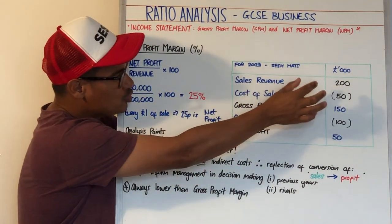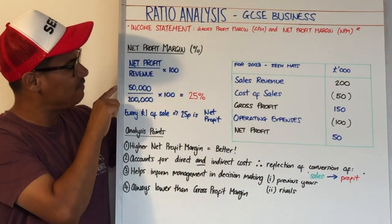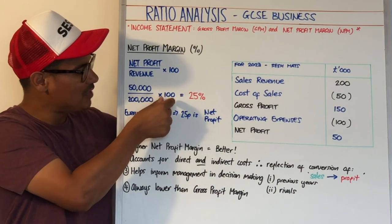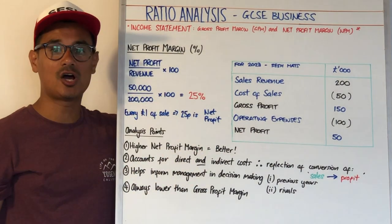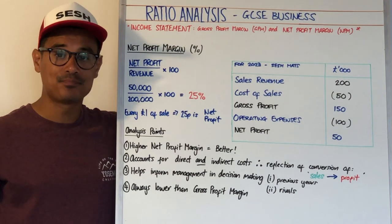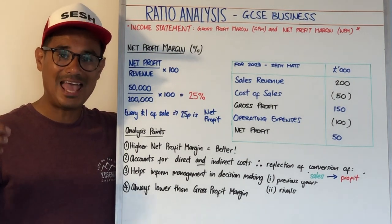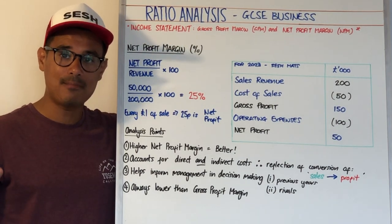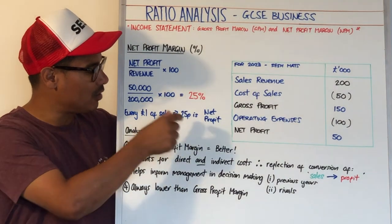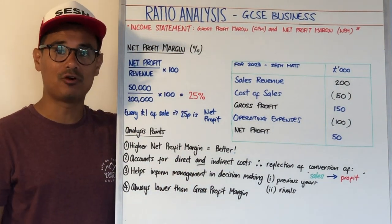Sales revenue is £200,000. So £50,000 divided by £200,000 times by 100 comes to 25%. And that 25% for the NPM — the net profit margin — means that for every £1 of sales, 25 pence is net profit.